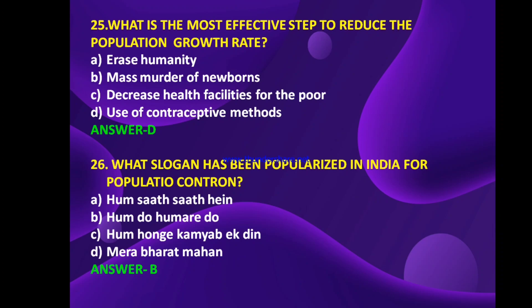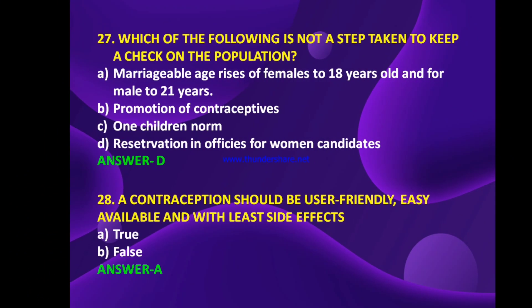What slogan has been popularized in India for population control — 'Hum saat sathe', 'Hum do humare do', 'Hum honge kaam', or 'Mera bharat mahan'? The answer is B — 'Hum do humare do'. Which of the following is not a step taken to keep a check on population — marriageable age raised to 18 for females and 21 for males, promotion of contraceptives, one-child norm, or restriction in offices for women candidates? The answer is D — restriction in offices for women candidates.